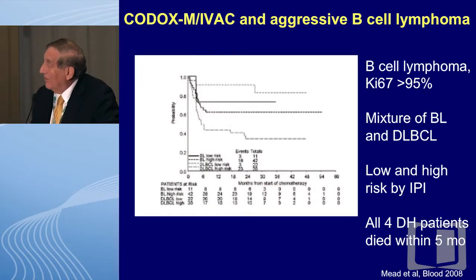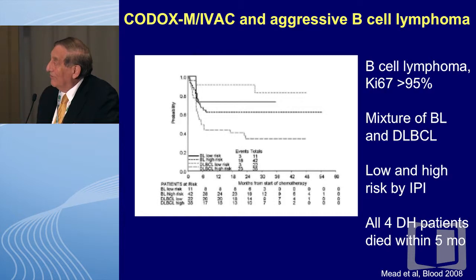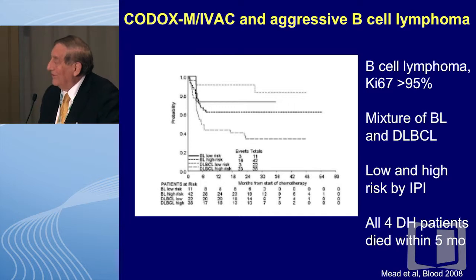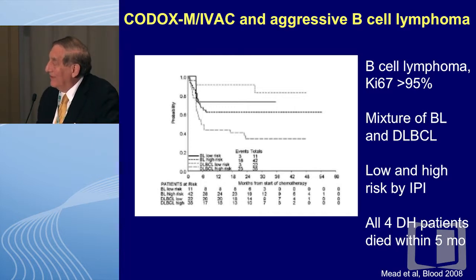A regimen developed a number of years ago for Burkitt's lymphoma was evaluated. Without focusing on this busy slide, just understand that all four double hit patients died within five months. So at least from this very limited study going back to 2008, it didn't look like the Burkitt's-type treatment is really going to work very well.